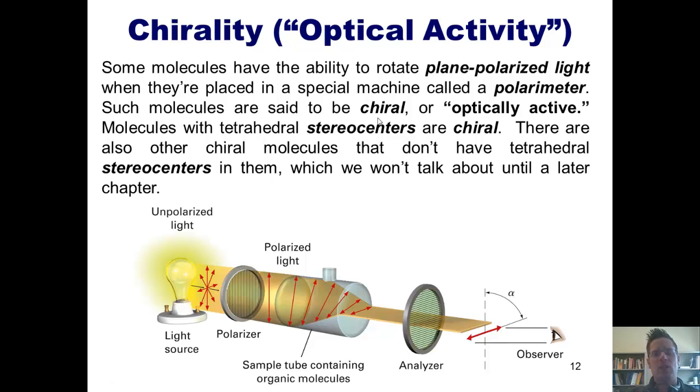Now molecules with tetrahedral stereocenters are chiral. There are also some other types of chiral molecules that don't have tetrahedral stereocenters in them, which we won't talk about until a later chapter.